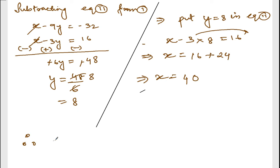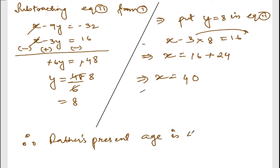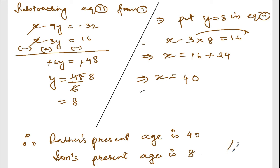Therefore, X means father's present age is 40, and son's present age is 8. That's all. I hope the answer is correct. Thank you so much. We will meet in the next video.